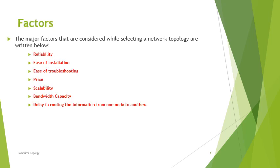The major factors to be considered while selecting a network topology are: reliability, ease of installation, ease of troubleshooting, price, scalability of network, bandwidth capacity, and delay in routing information from one node to another.